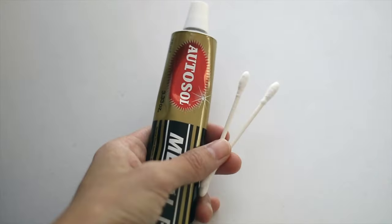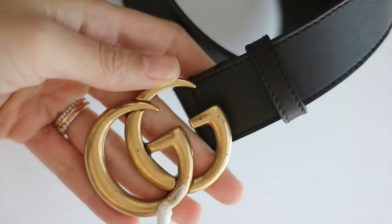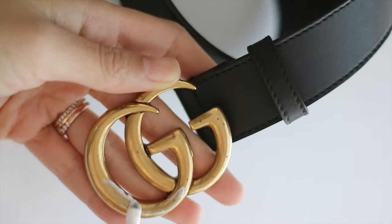Then you'll add a small amount of the Autosol metal polish to a Q-tip and start to work that cream polish on top of the oxidation marks.